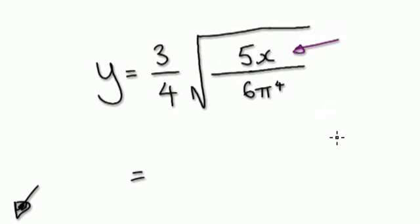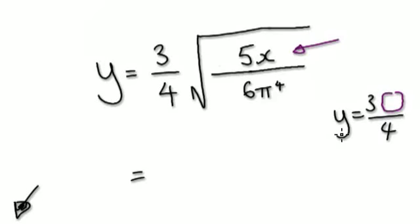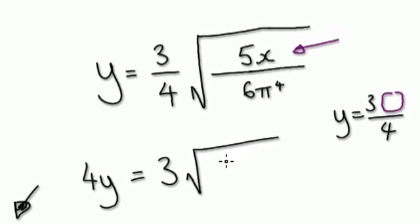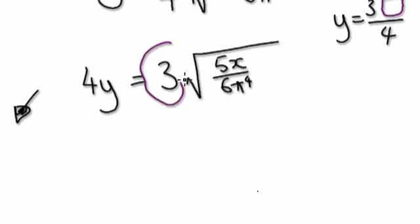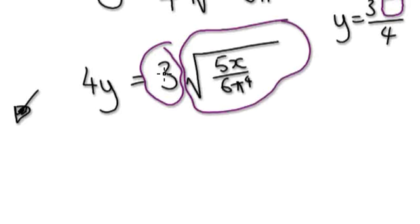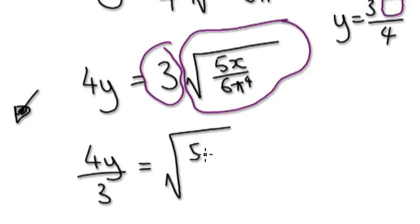I'm going to visualize this as, over here somewhere, 3 bubble over 4. So times both sides by 4. You have 4y, and then you have 3 root 5x over 6 pi to the power of 4. And now visualize this as this thing here — multiplying this thing here. Divide both sides by 3. So it would be 4y over 3, and then you've got this thing left: 5x over 6 pi to the power of 4.